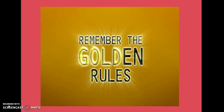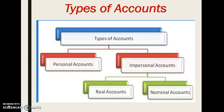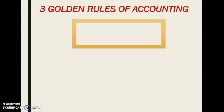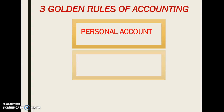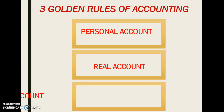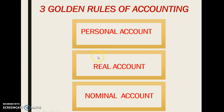In our previous session we learned about different types of accounts — personal account and impersonal account. Impersonal account is further classified as real account and nominal account. Now we will discuss the golden rules of accounting. Three golden rules of accounting is the most commonly used term in the field of accounting and finance, and these three golden rules are applicable with three types of accounts: personal account, real account, and nominal account.